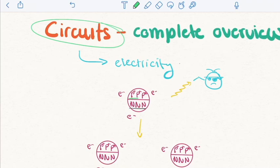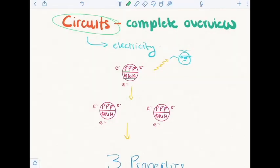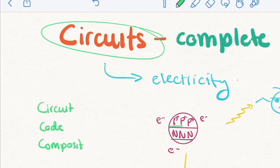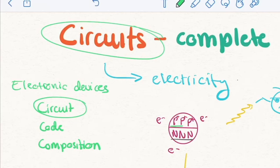First, I want to talk about why would you ever want to learn about circuits? Why would you ever want to understand circuits? If you want to understand electronic devices, it's imperative that you understand the three big components — at least in my view — that compose them. The first component is the circuit. The second component is the code. And the third component is the composition of these two.